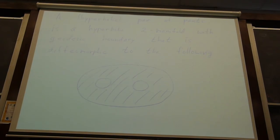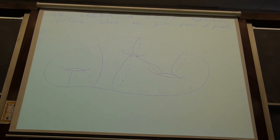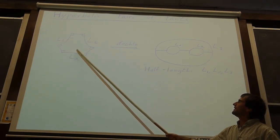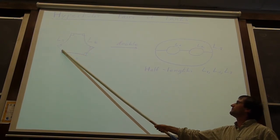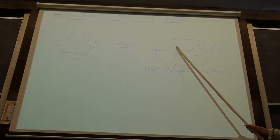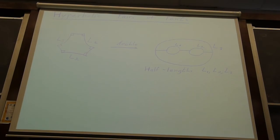Now let's go back up to two dimensions. A pair of pants can be used to make a surface — we're going to make hyperbolic surfaces out of pairs of pants, and eventually covers out of pairs of pants. A hyperbolic pair of pants can be made by doubling a right-angled hyperbolic hexagon over three sides. It has three half-lengths L1, L2, and L3, which are the lengths of alternating sides on the hexagon.